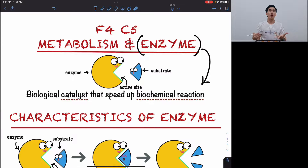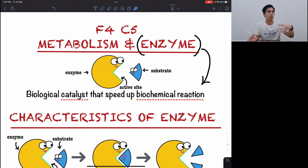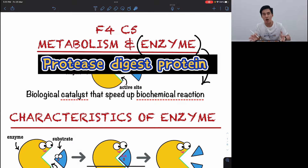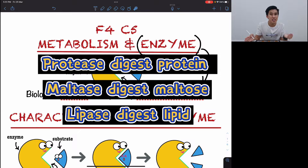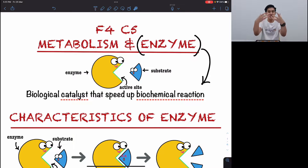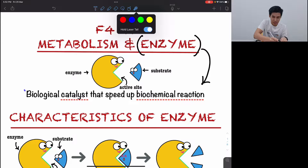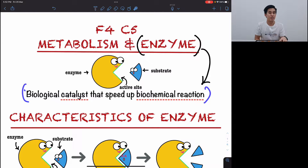Enzymes are usually associated with digestion — you need enzymes to digest food, and different kinds of enzymes are needed to digest different kinds of food. For example, proteases digest protein, maltase digests maltose, and lipase digests lipid, which is fat. Without enzymes, digestion takes very long — days. But since you eat today and release the next day, enzymes are what speed up the digestion process.